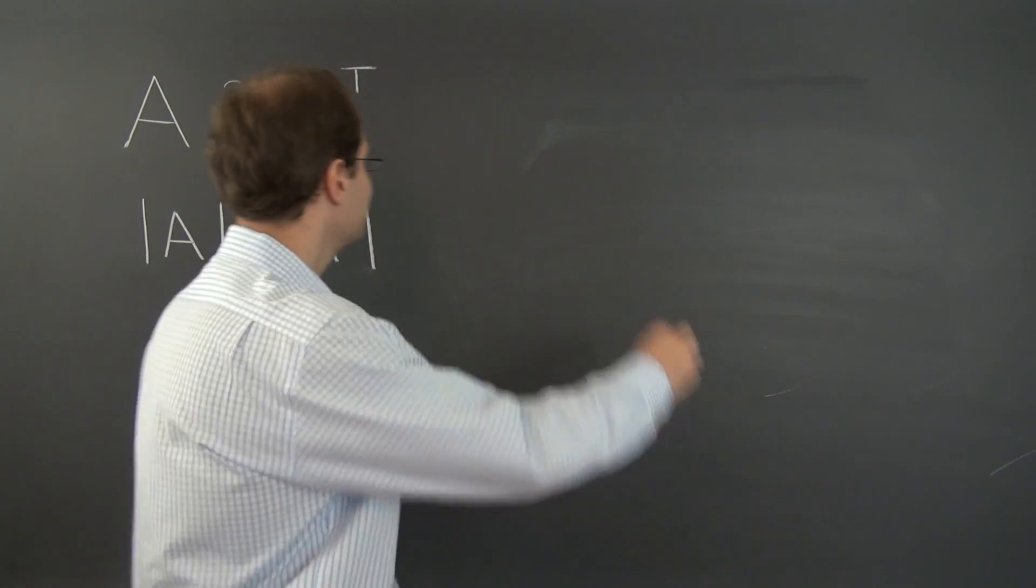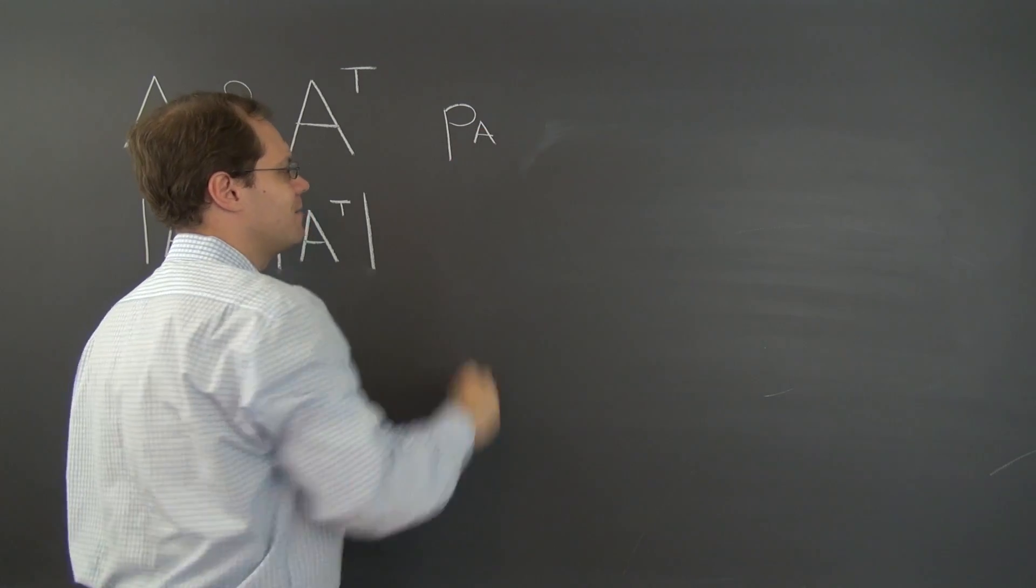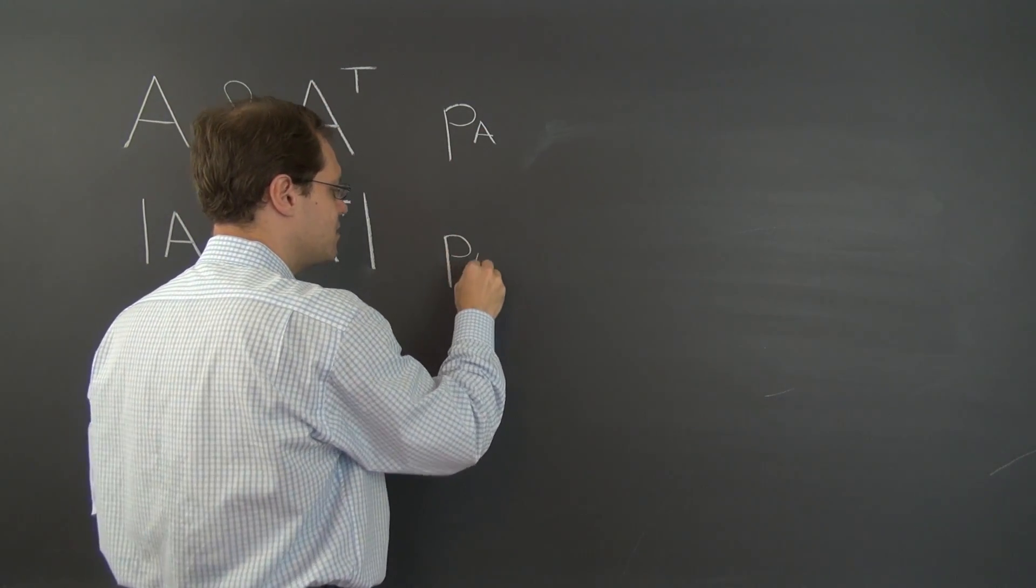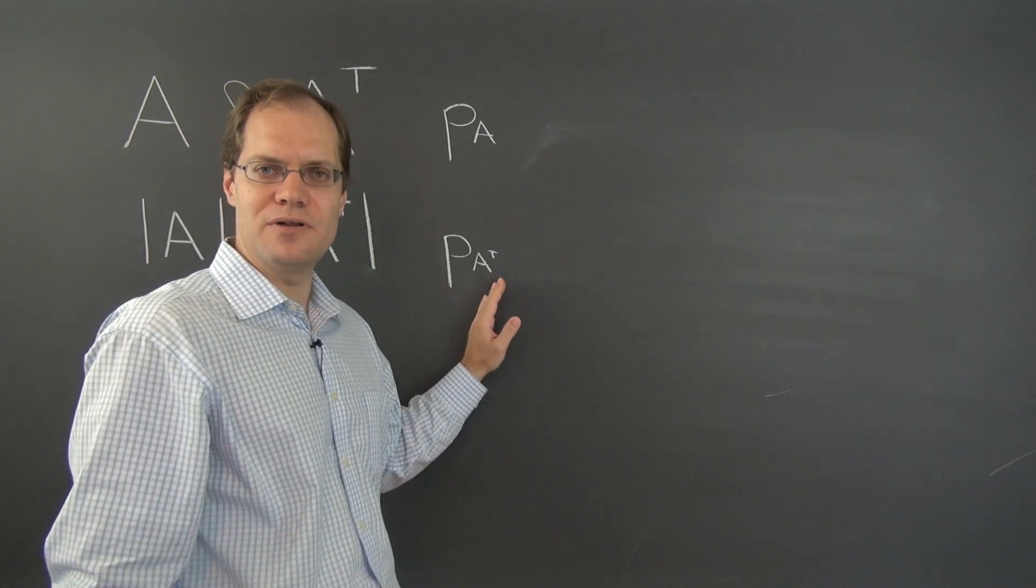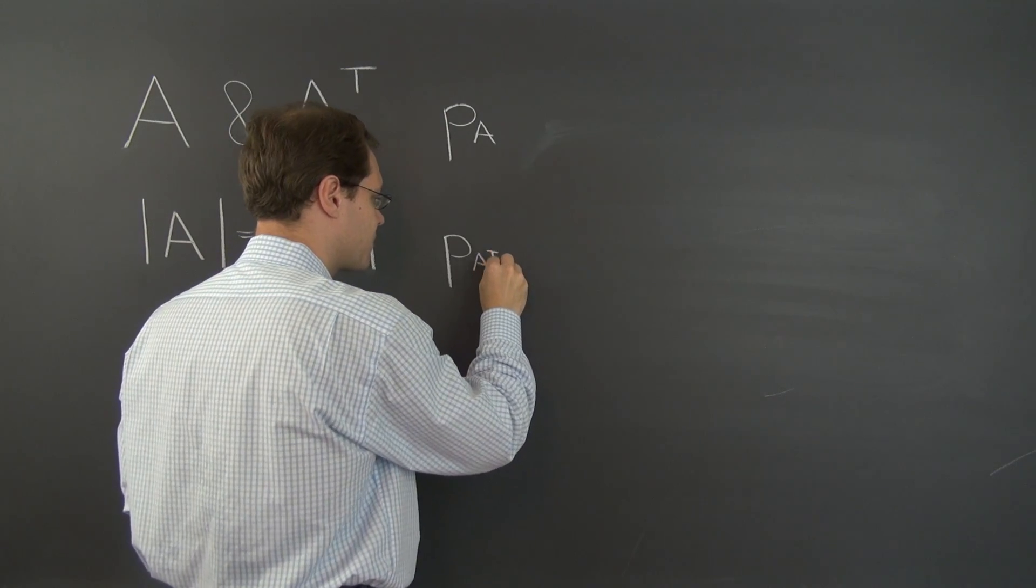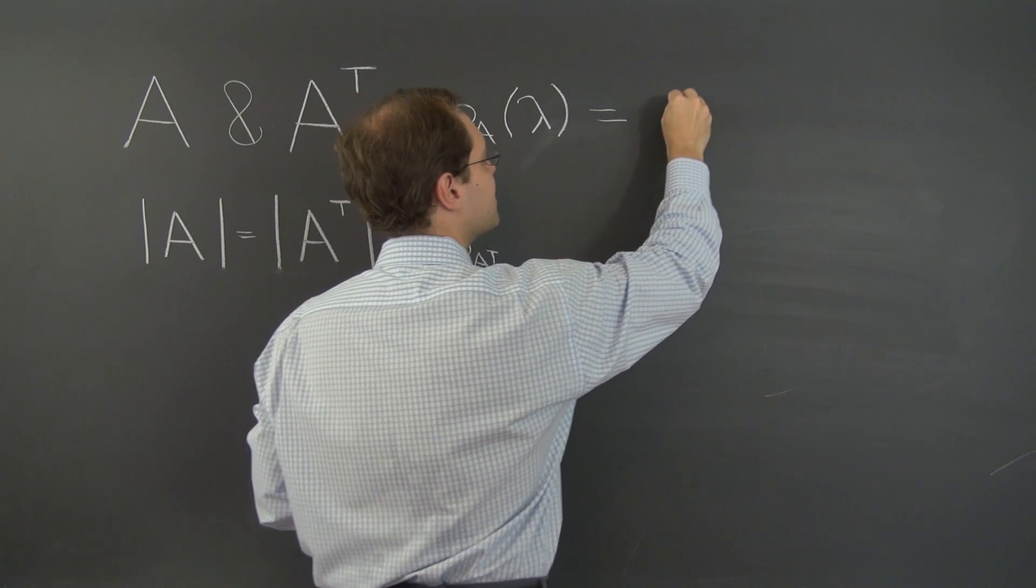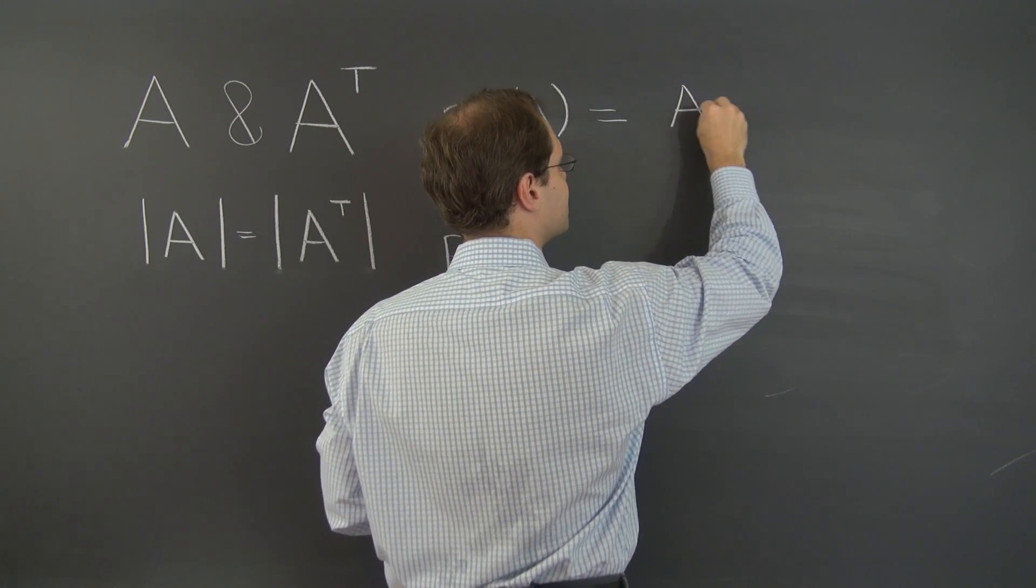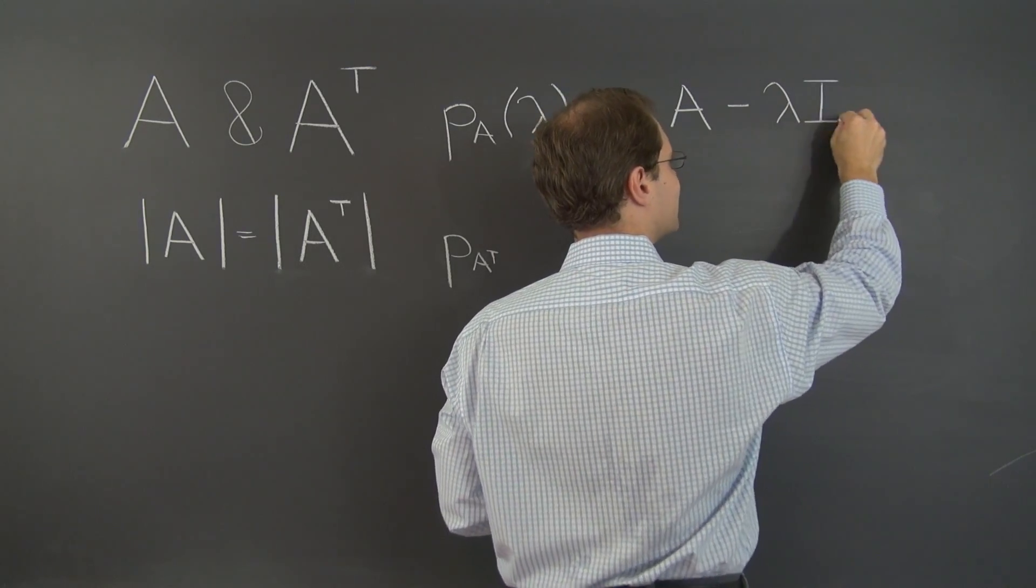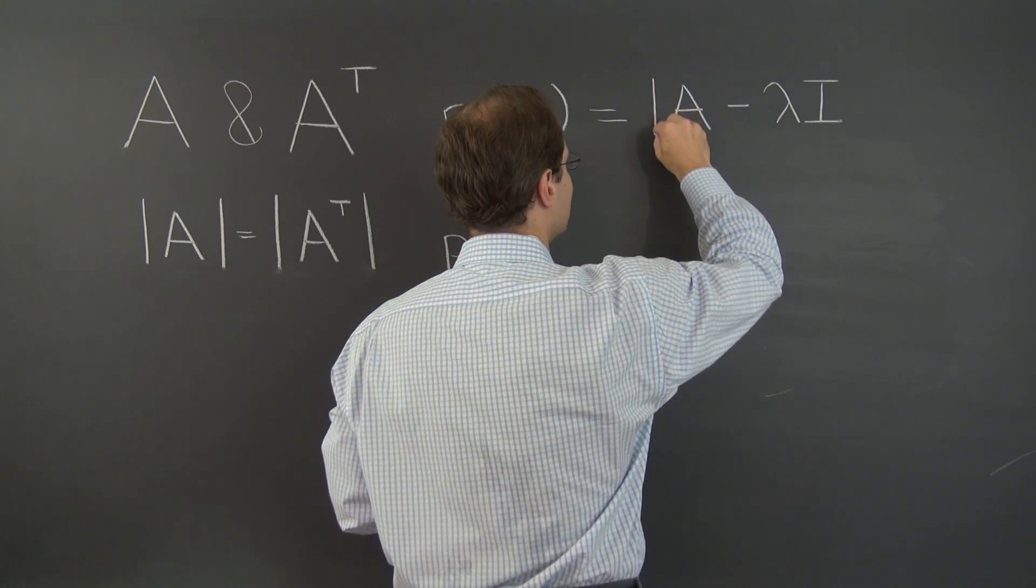We begin by calculating the characteristic polynomial. And this time I'll label it P sub A, because in a moment I will calculate P sub A transpose, which will be the characteristic polynomial corresponding to A transpose. But going back to P of A, it is calculated by subtracting lambda from the diagonal of A, which we write in matrix form like this, and then evaluating the determinant of the resulting matrix.